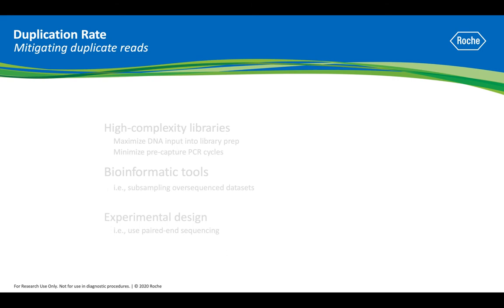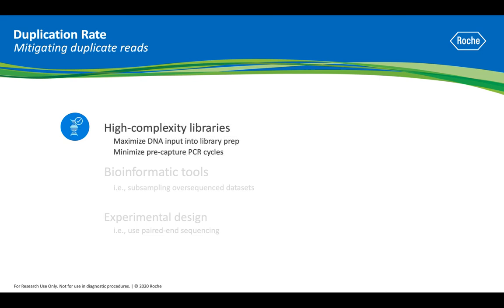There are several ways to reduce the occurrence and impact of duplicate reads. First, ensure that library complexity going into target enrichment is as high as possible. For example, maximize the amount of DNA input into library generation and minimize the number of pre-capture PCR cycles to reduce the occurrence of duplicate reads.